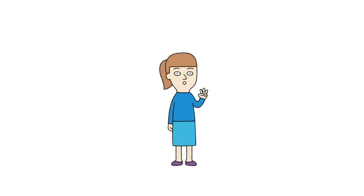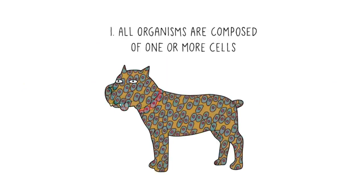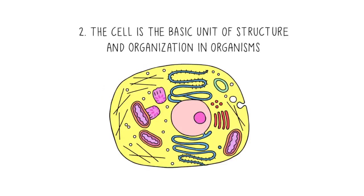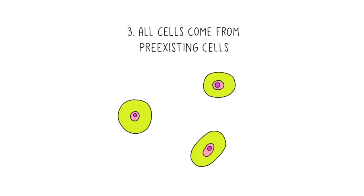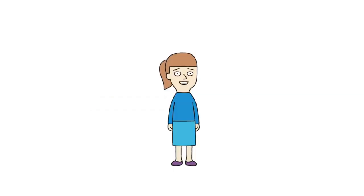There are three parts to the cell theory. One, all organisms are composed of one or more cells. Two, the cell is the basic unit of structure and organization in organisms. And three, all cells come from pre-existing cells.